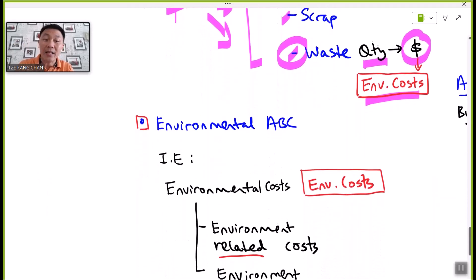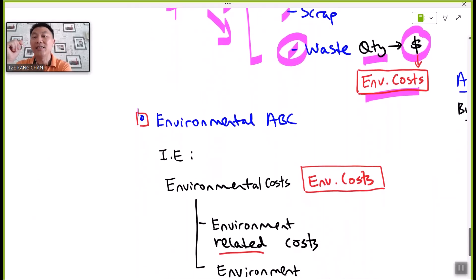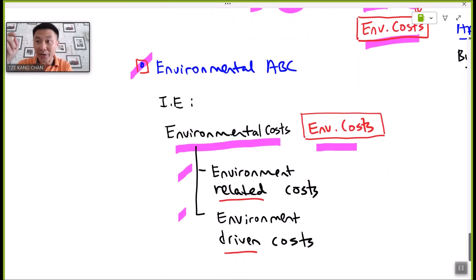Here comes the second approach and technique, the environmental activity-based costing, which originates from the ABC framework. Given the cause and effect relationship as stipulated in ABC, the environmental ABC would ultimately be able to provide the findings on costs pertaining to environment, which is in simple terms environmental costs, that divides into two categories.